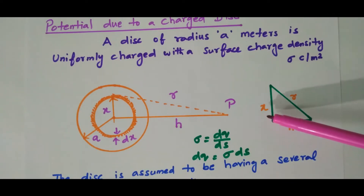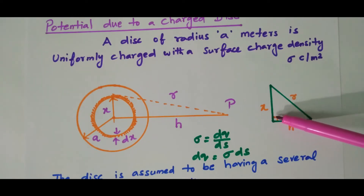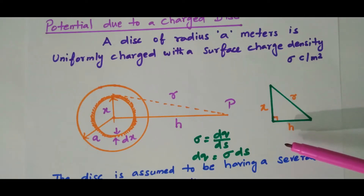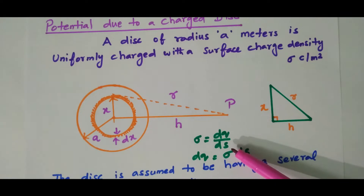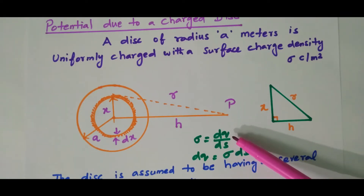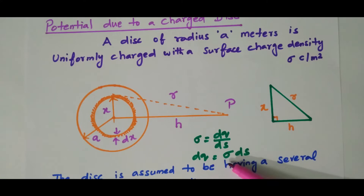The triangle has sides h, x, and r, with h being the perpendicular side. Now using the surface charge density, sigma equals dq divided by ds. We are considering the entire surface of the disk, so dq equals sigma times ds.